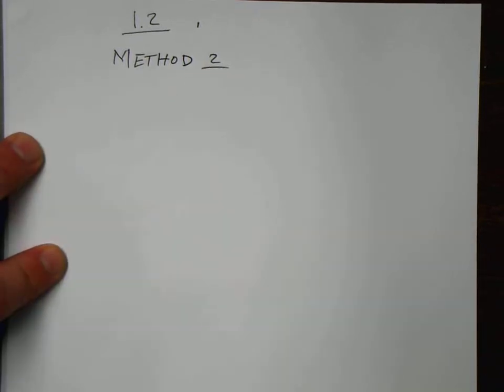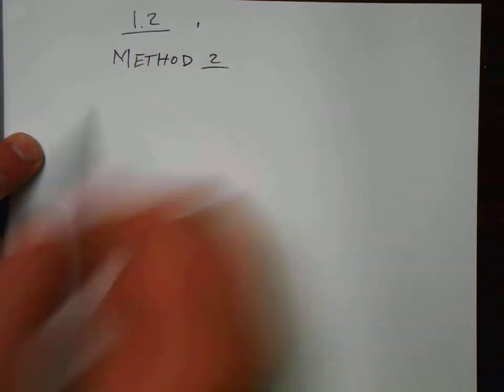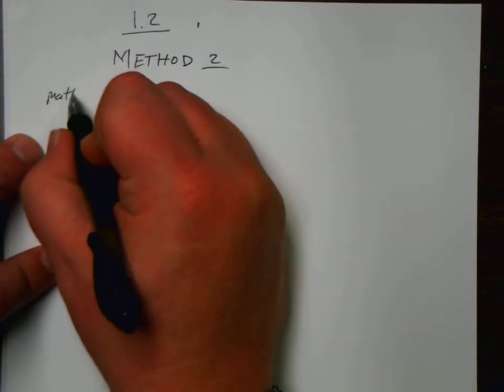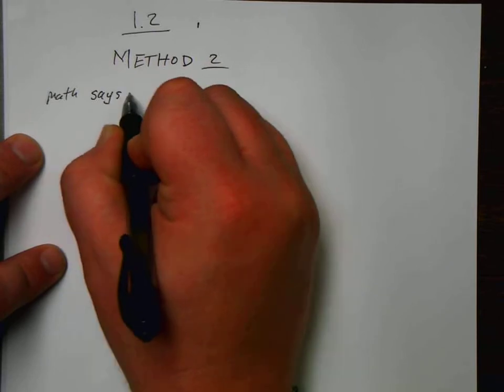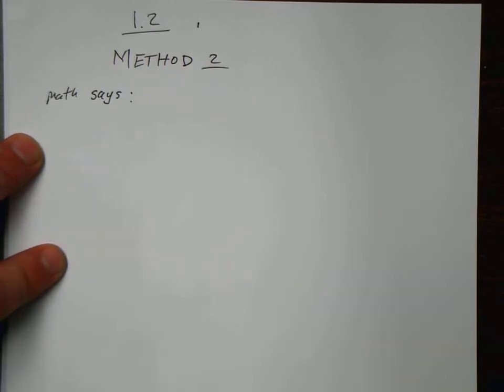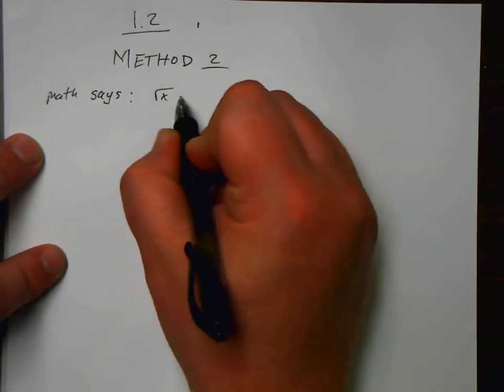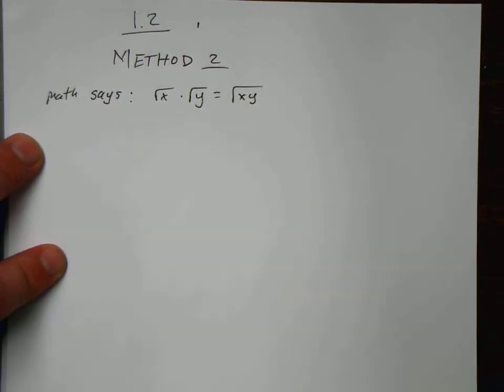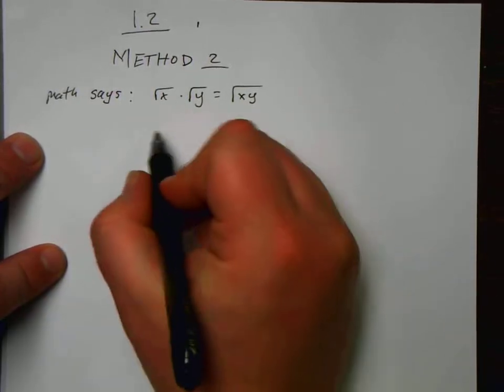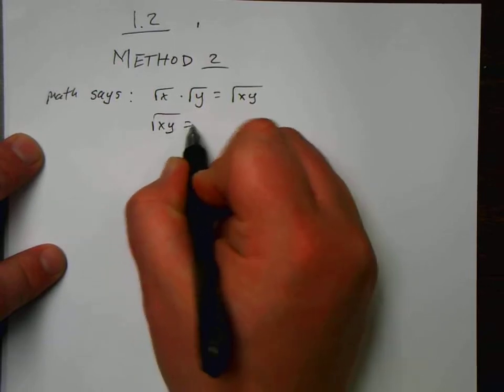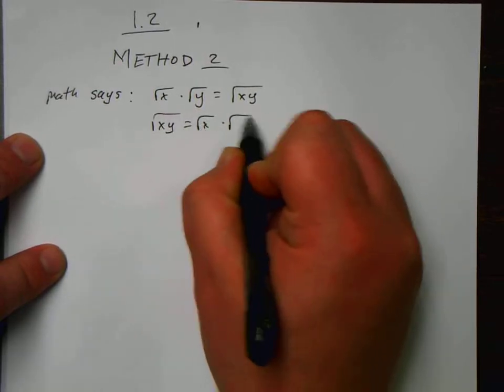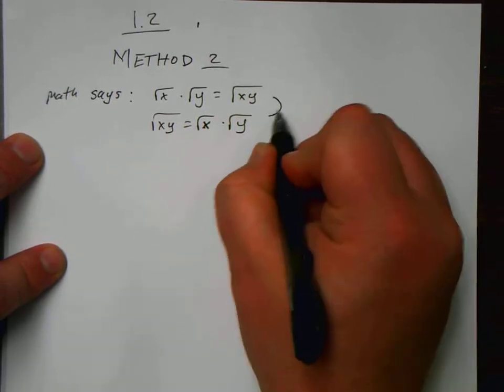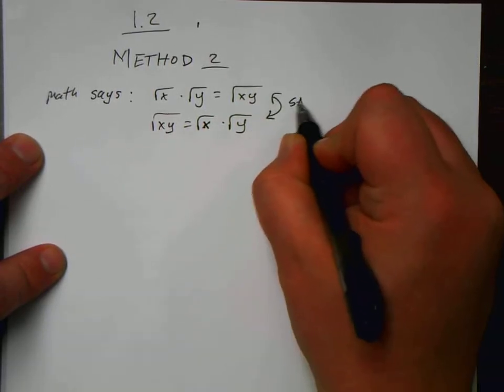Okay, I know that math says that the square root of something times the square root of something else is equal to the square root of those things being multiplied. Another way of looking at that is the square root of two things being multiplied is the square root of the first thing times the square root of the second. Alright, so these are saying the same thing.